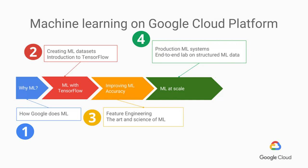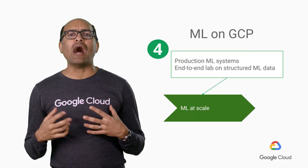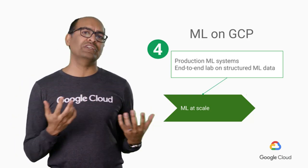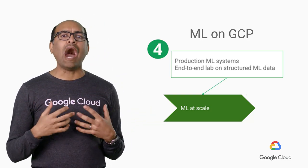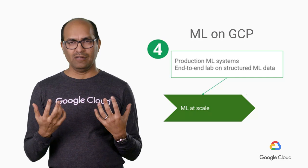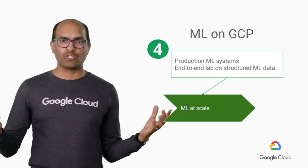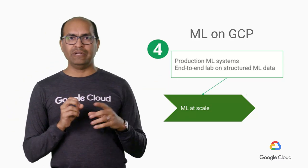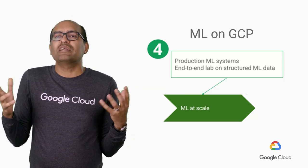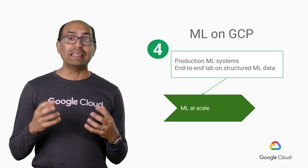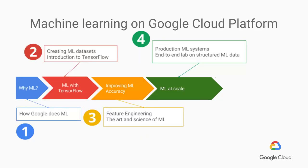We then move on to a set of courses that are about operationalizing the machine learning model. By that I mean training it at scale, in a distributed way, serving out the predictions, building a machine learning model end to end. Operationalizing a machine learning model can be super hard — it is a stage where most enterprise machine learning projects fail.